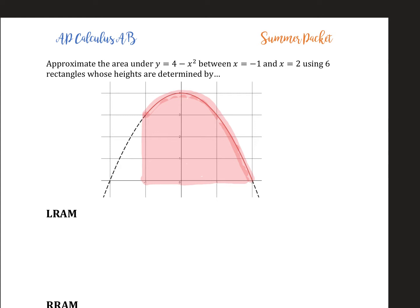In this case, we're asked to use 6 rectangles whose heights are determined by LRAM. LRAM stands for left-hand rectangle approximations. From negative 1 to 2, the total width is 3, divided into 6 rectangles. So 3 divided by 6 is 1 half. Each rectangle will have a base of 1 half.